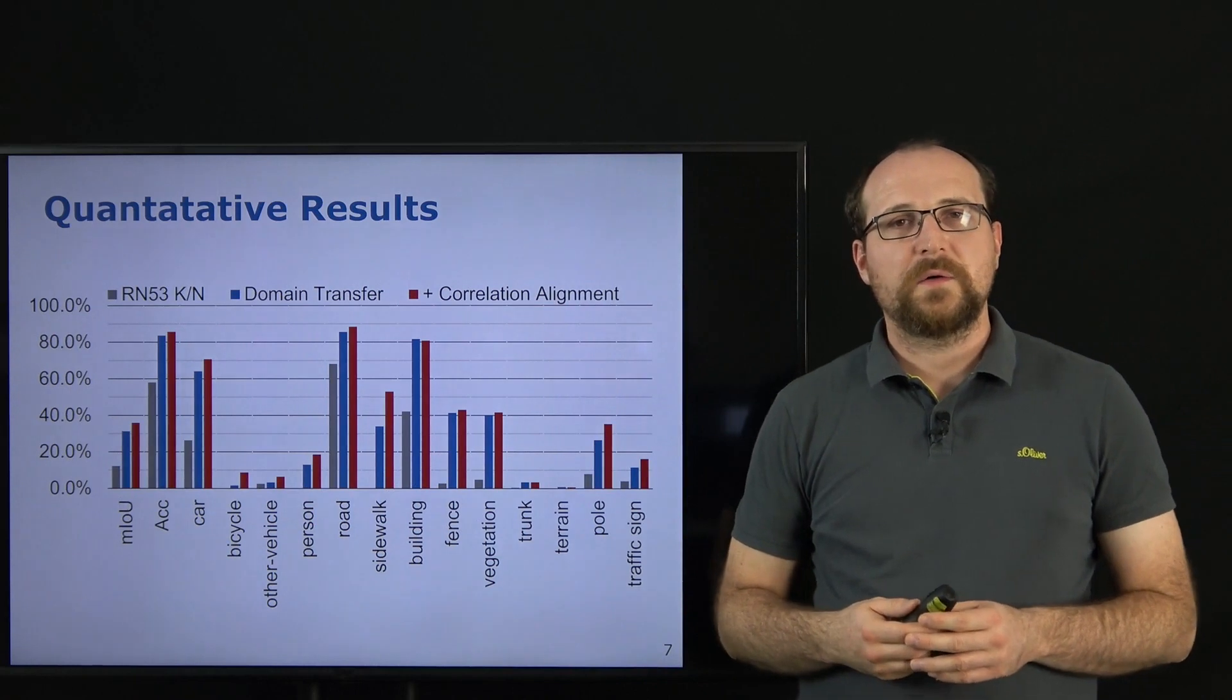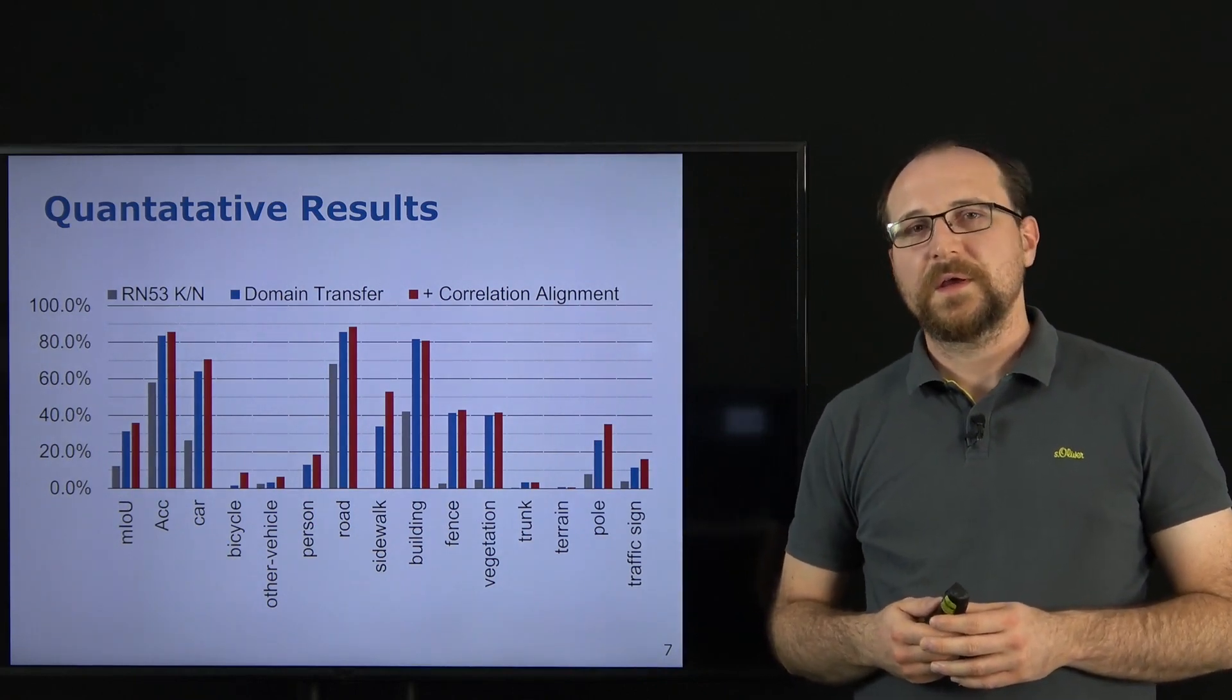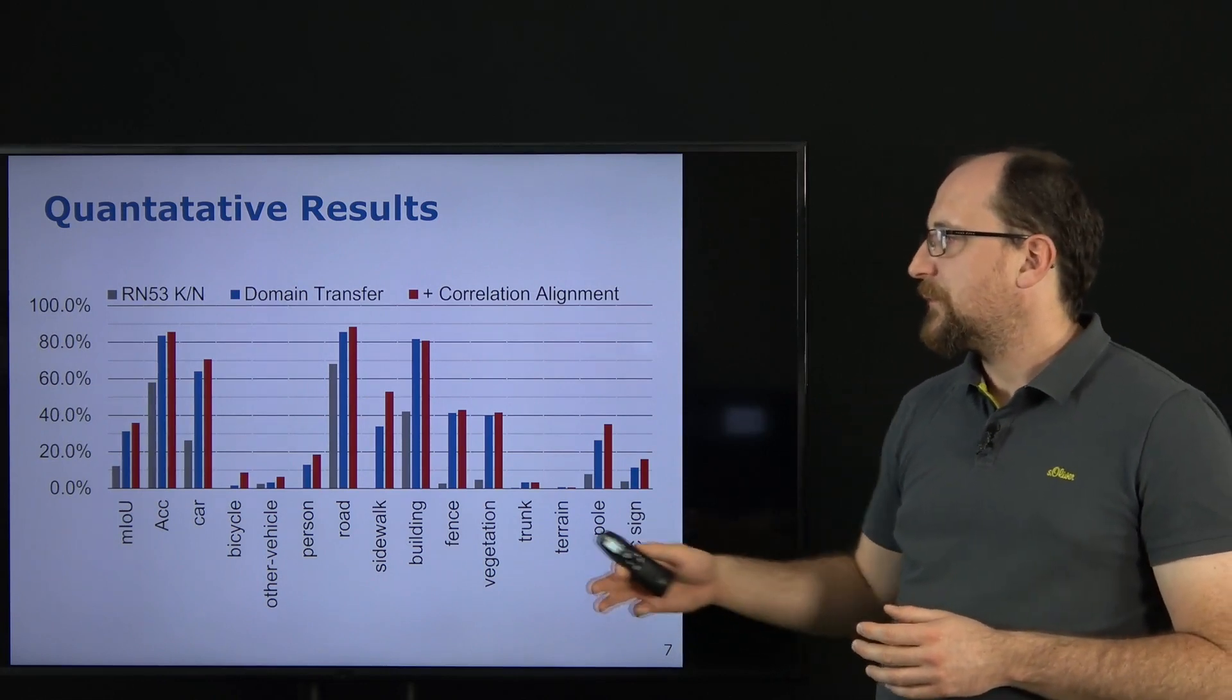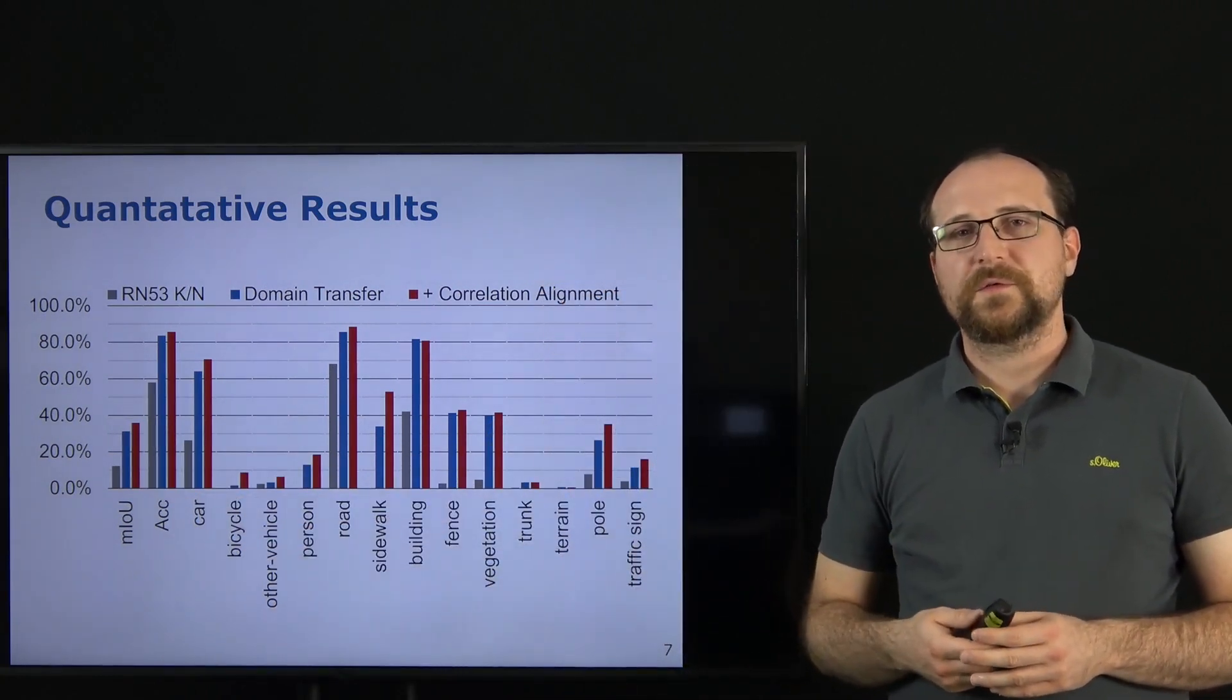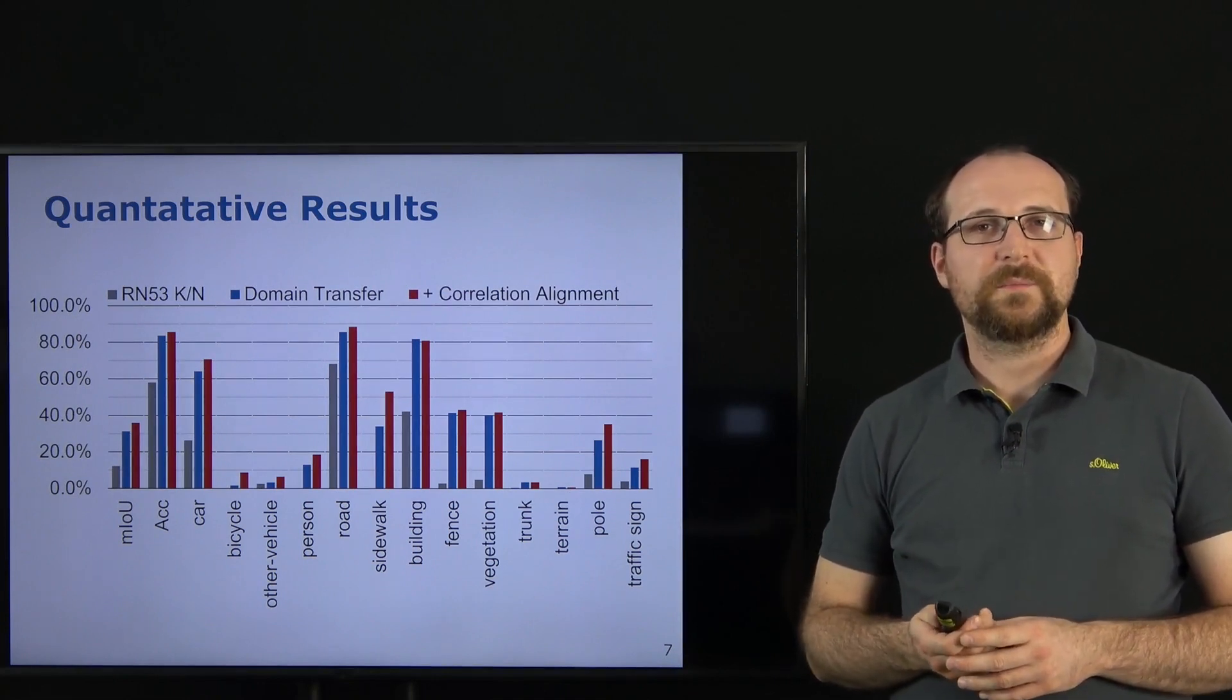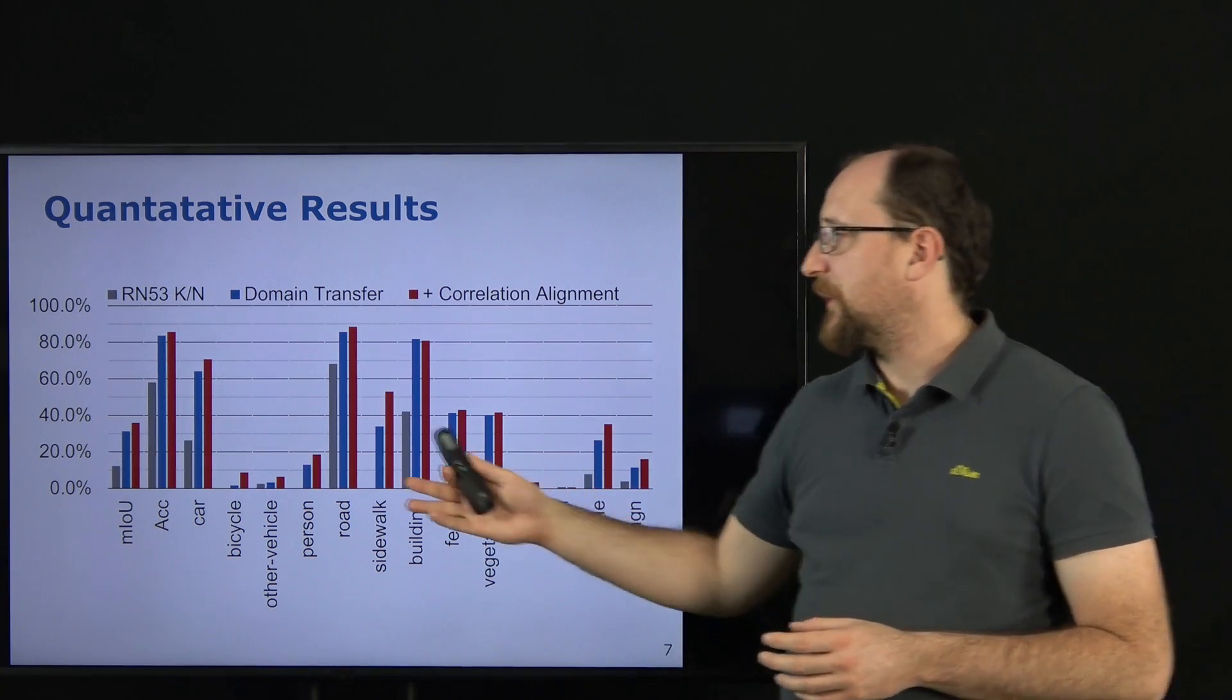When we now compare this to our approach, which was trained with the synthetic point clouds generated with the specific target configuration, we can see that we improved the results to over 36% mean intersection over union. In the paper we also investigated when we use on top of this an unsupervised domain adaptation approach, the correlation alignment, and we can further improve the results a bit.